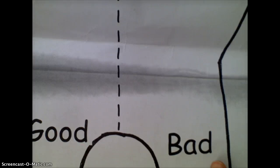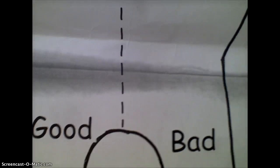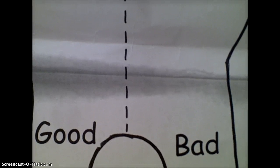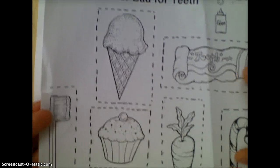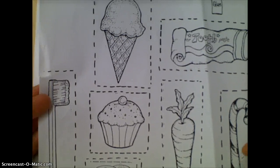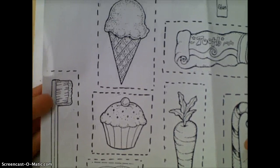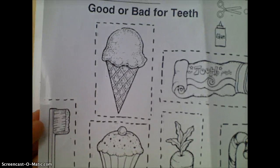You're going to use this sheet to glue on pictures that are good for your teeth or bad for your teeth. Now you're going to grab a sheet that has lots of different pictures that you need to color first. You're going to color with crayons. Grab your crayons and begin to color.